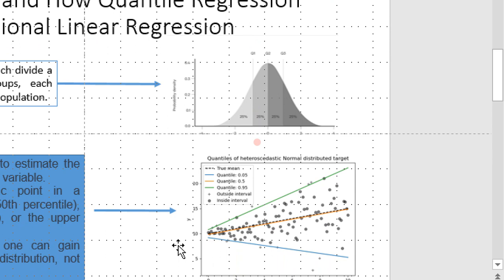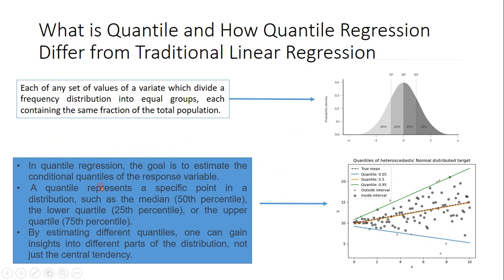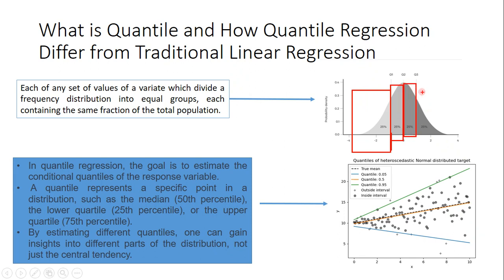We can control which region of our data we want to predict our output in. The goal in quantile regression is to estimate the conditional quantiles of the response variable. A quantile represents a specific point in a distribution — such as the median, 25th percentile, or 75th percentile. If talking about a percentile it can be a specific point, and when divided into four parts it can also be called a quartile.